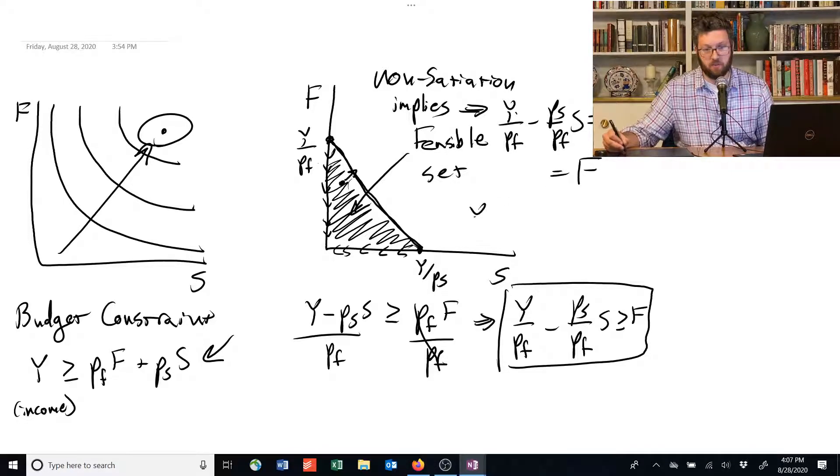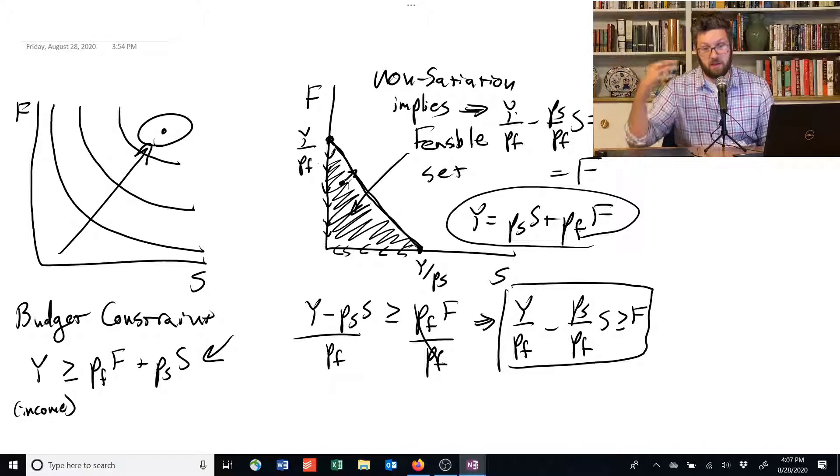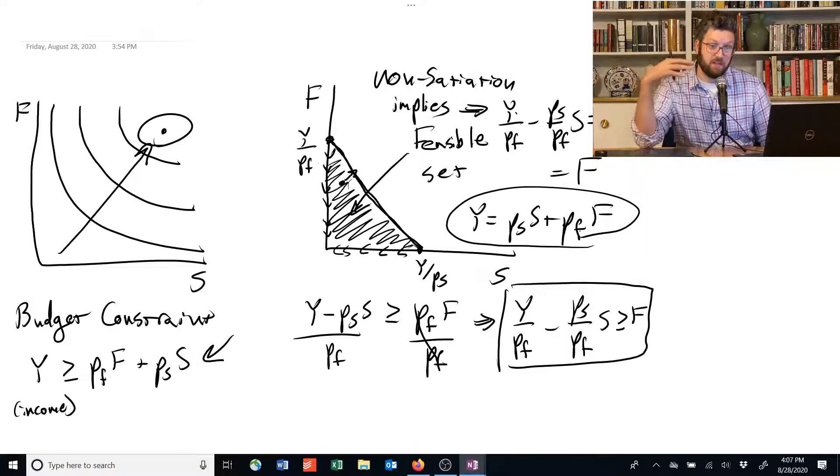Another way to put it is Y is going to be equal to the amount you spend. The amount of money you have is going to be fully spent in this economy because the only things to buy are food and shelter.